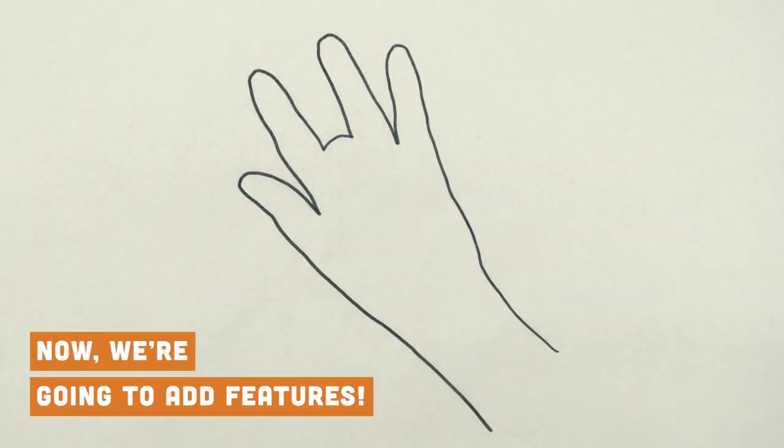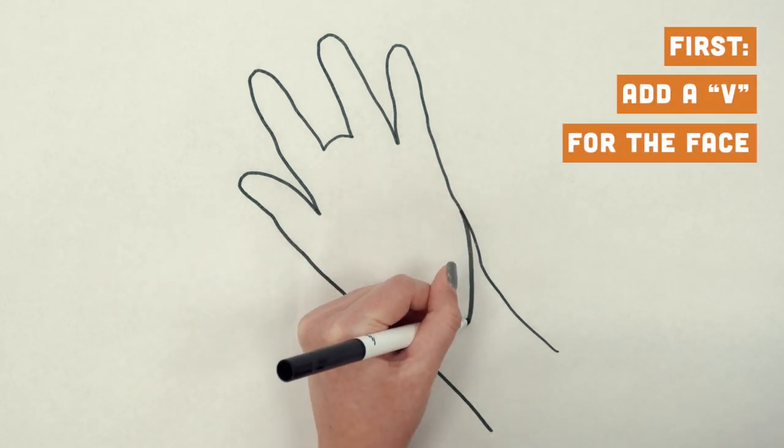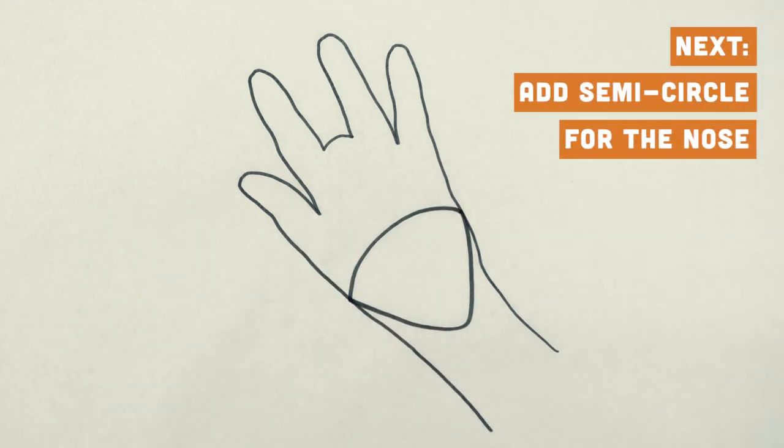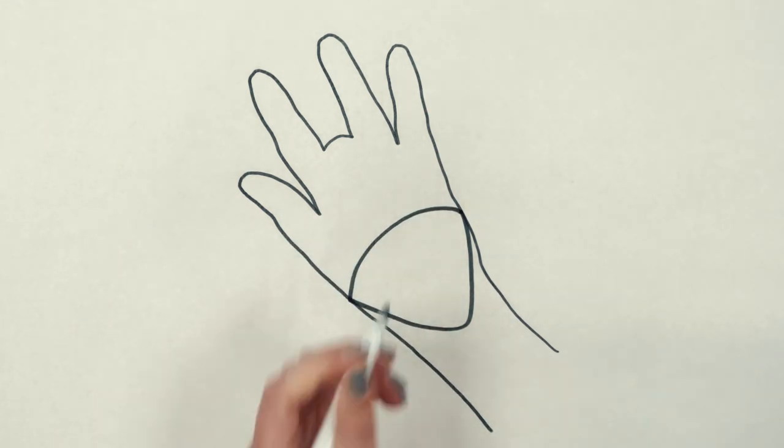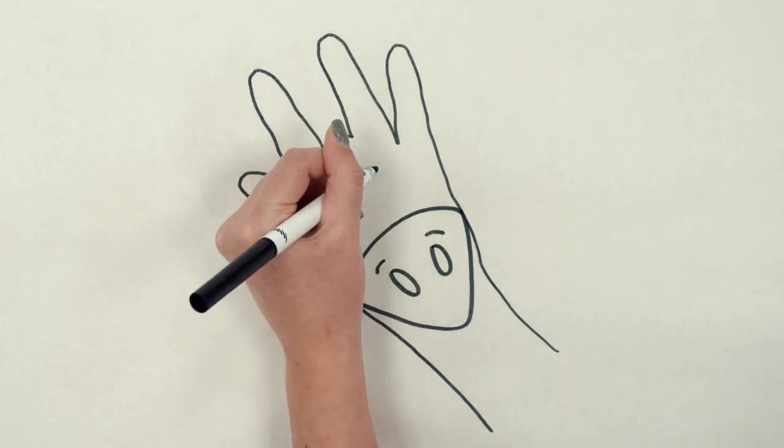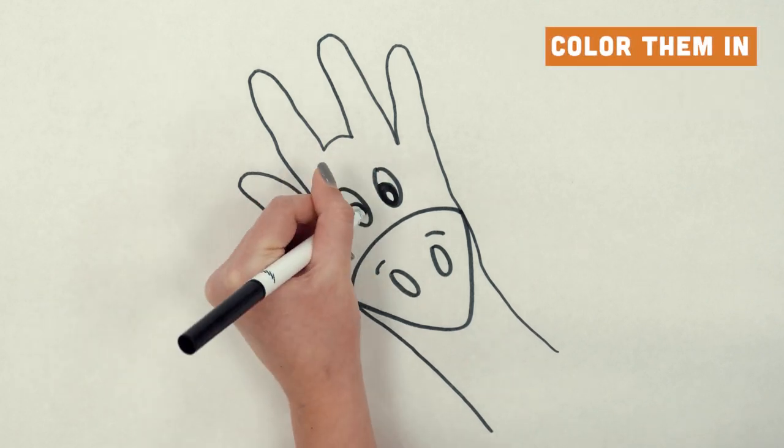Now we're going to add features. First start with a v-shape for the giraffe's face. Then add a semi-circle to indicate his nose. Add nostrils with accents and two circles for eyes. Color them in any color you like.